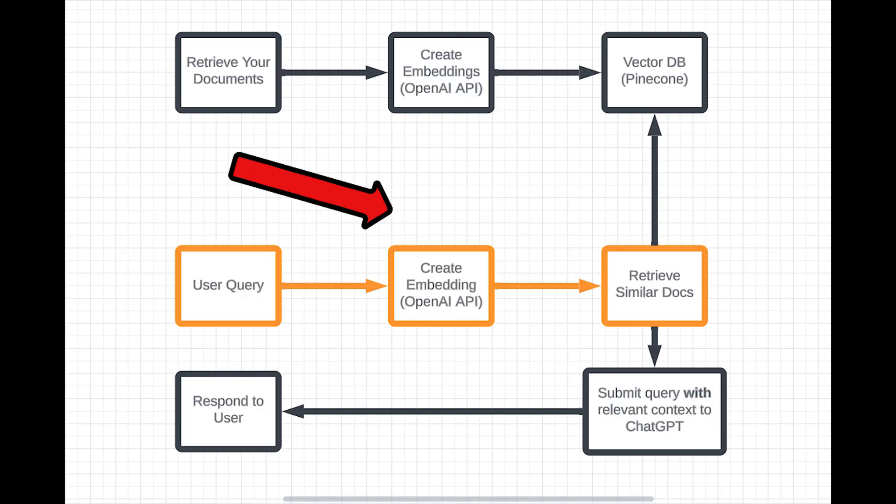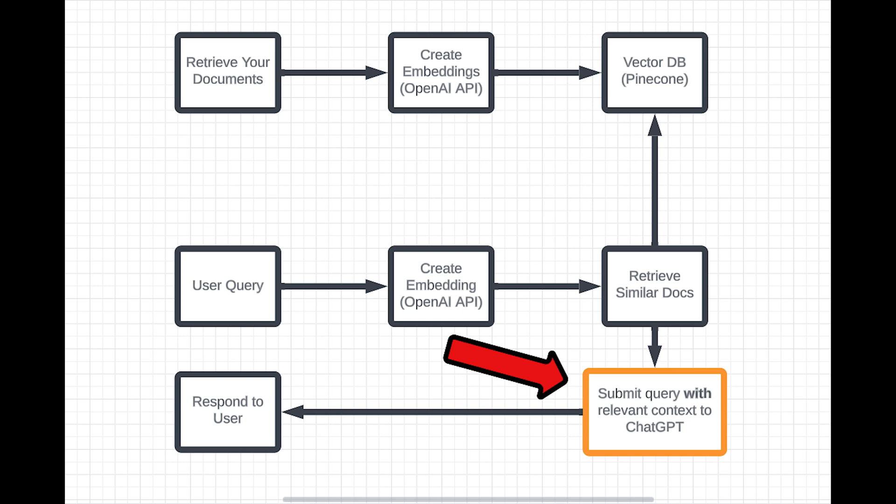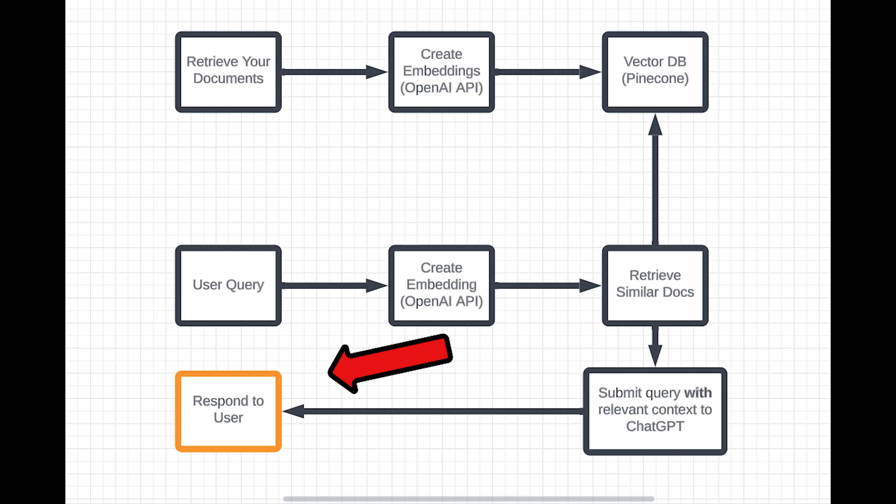So once our documents are in the vector database, when a user asks a question, we can calculate a new embedding for that question and match it up with the most relevant documents. Then once we've retrieved the document, we can combine the question and that document when we make a query to ChatGPT. ChatGPT will use its reasoning to pull out the relevant information from the document to answer the user's question.